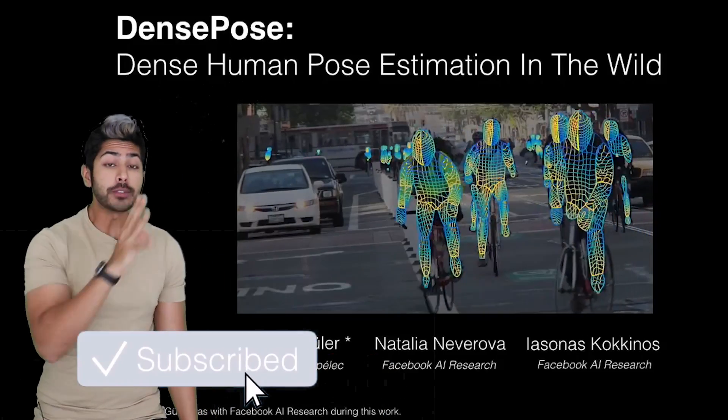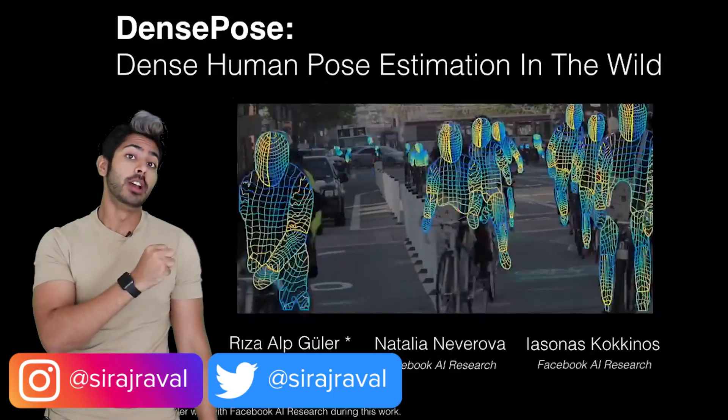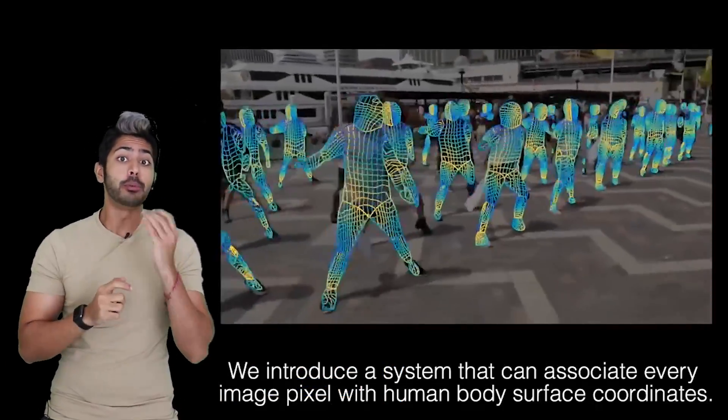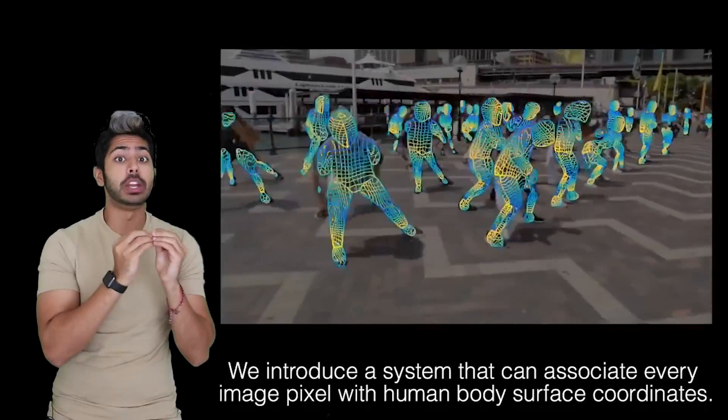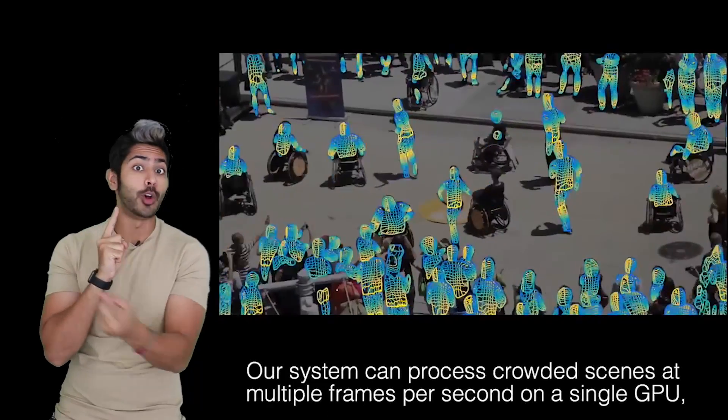Hello world, it's Siraj. Just a few days ago, Facebook's AI research team released a demo called DensePose. They were able to map out every single pixel of a human body in a given video, not just for a single human but for many humans all at once.